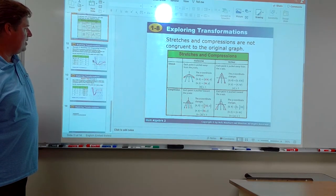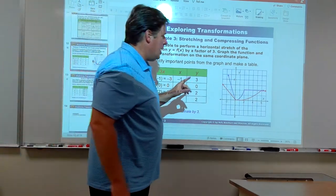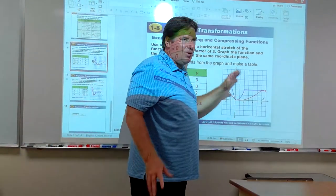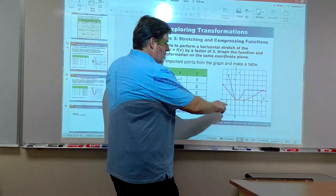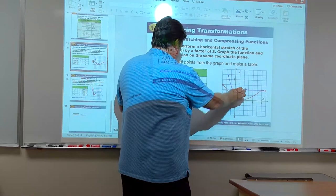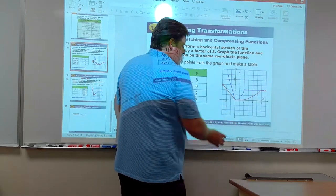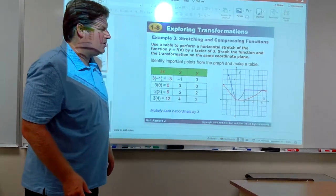Once again, if given a graph, we're going to be given the blue graph. So, what I would do is choose three or four points. I think (-1, 3), that's a good point right here. (0, 0), (2, 4), and (4, 2)—I'm sorry, (2, 2), and (4, 2)—would be the points that I could choose there.